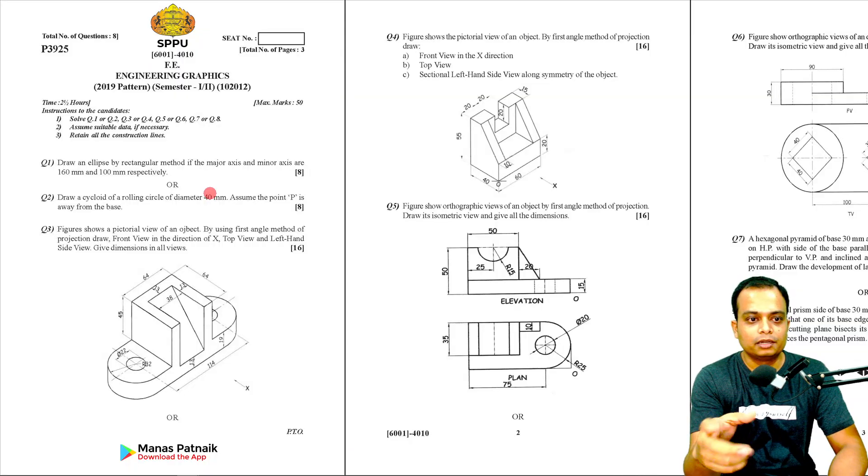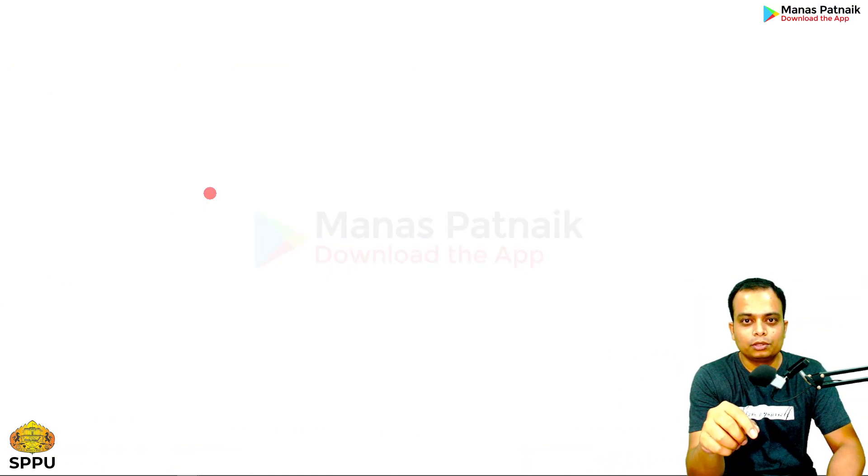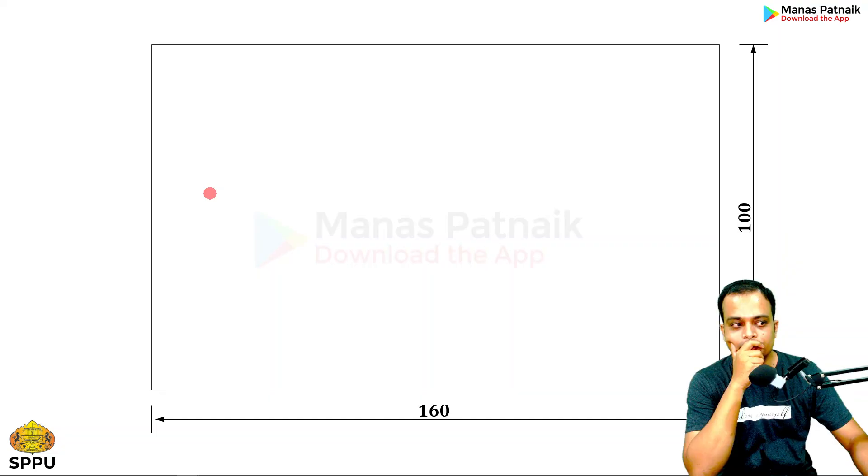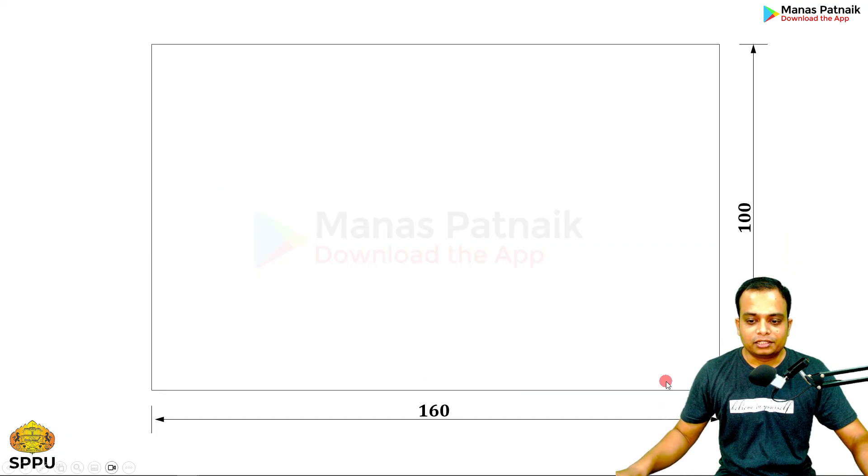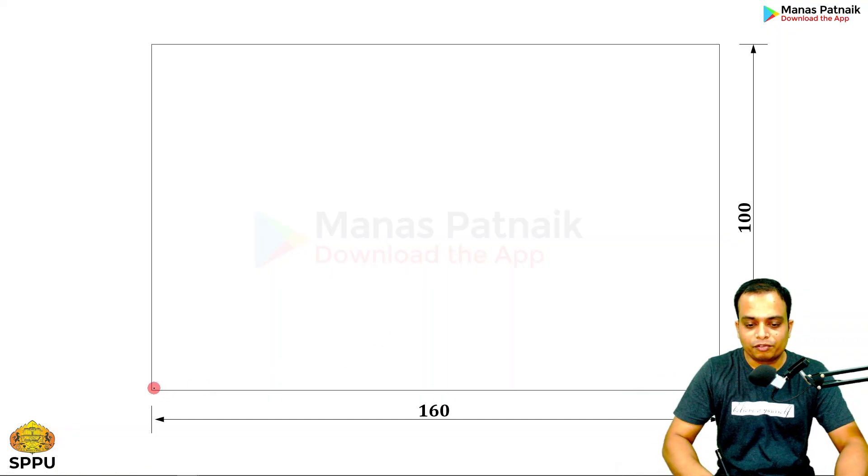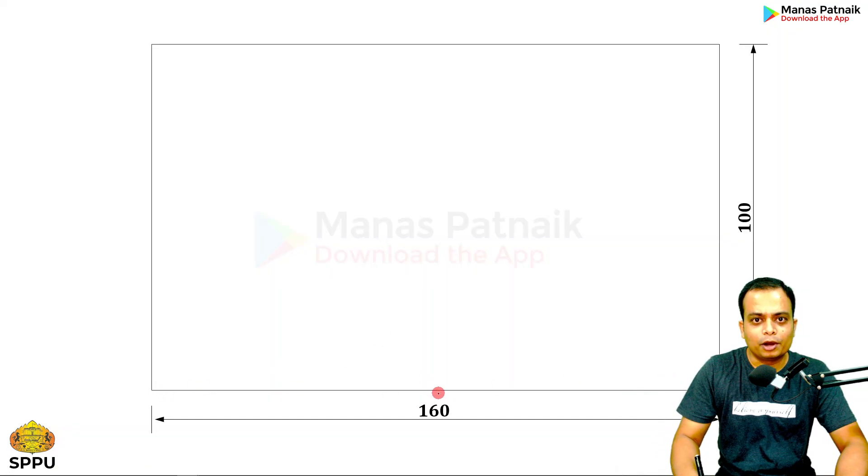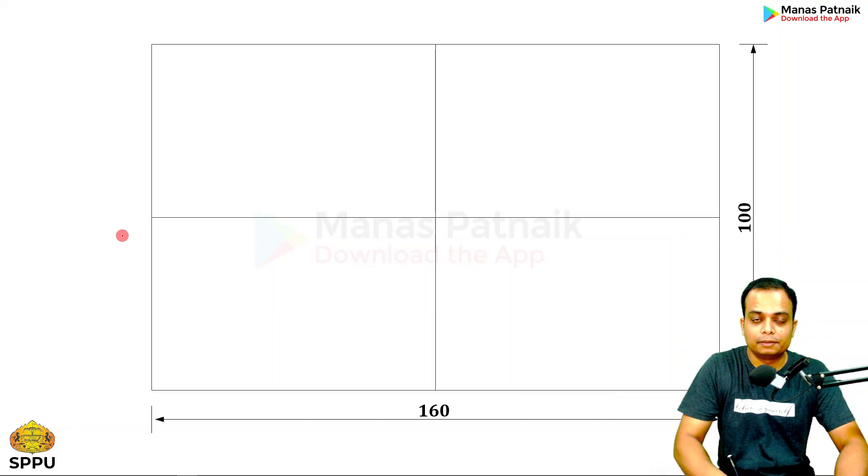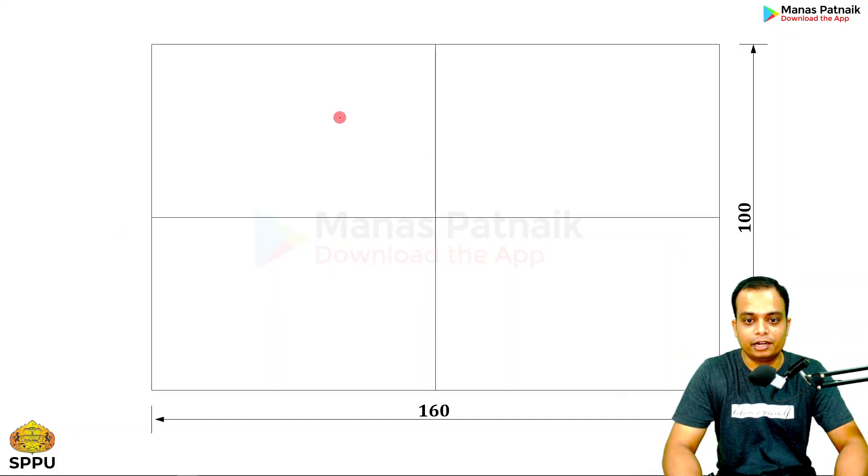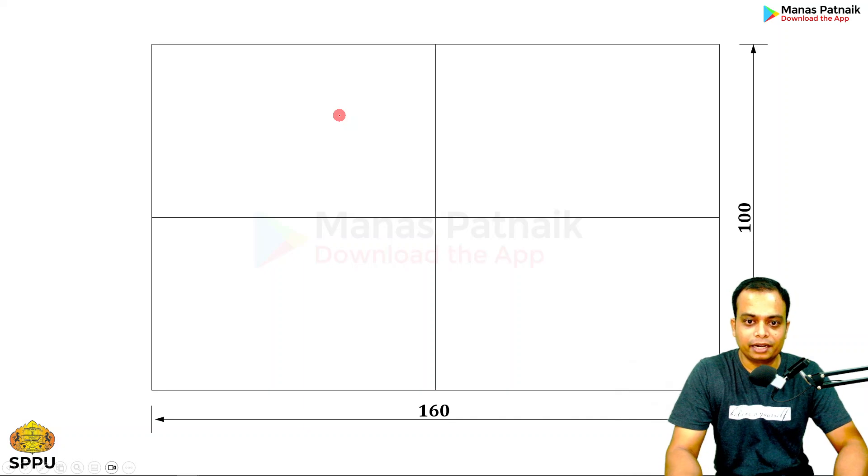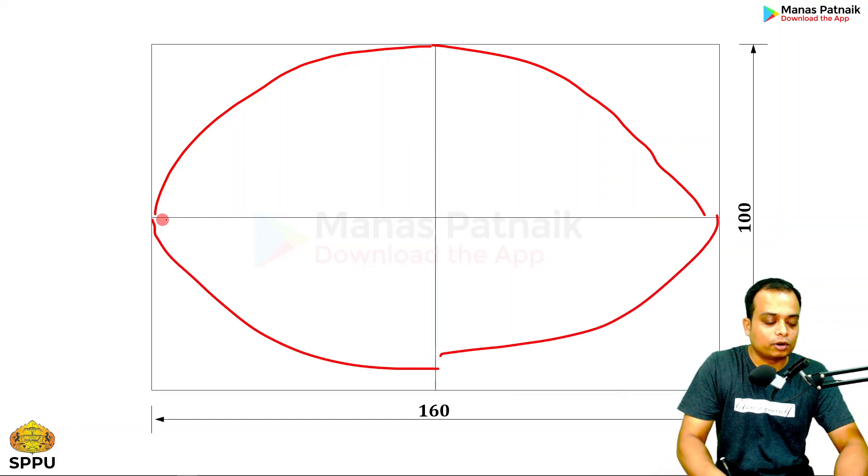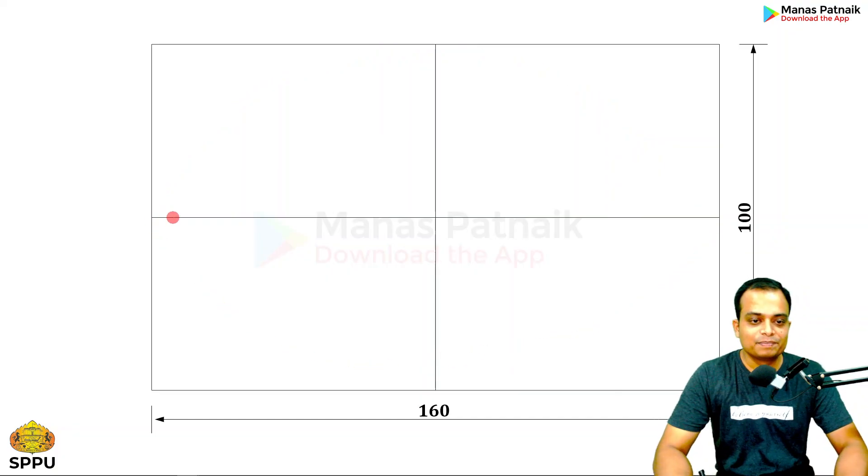The best way to start is to make a rectangle 160 by 100. At a distance of 80, half of 160, pass a vertical line through it. Similarly, at a distance of 50, half of 100, pass the horizontal line. This rectangle has been divided into four separate rectangles. Quarter limits will be at these four corners.